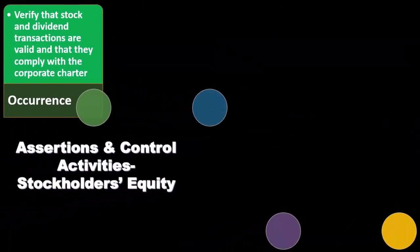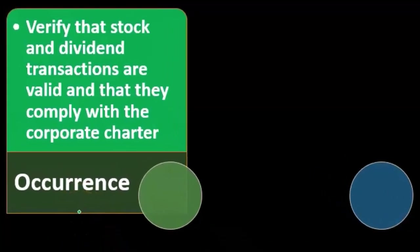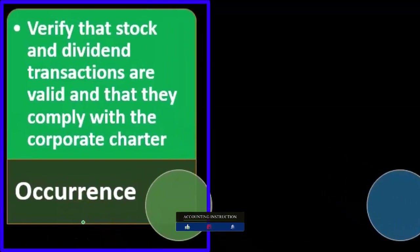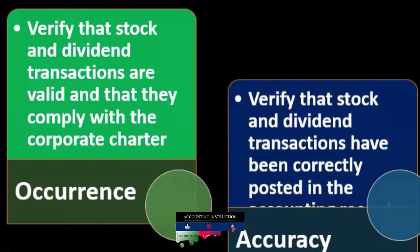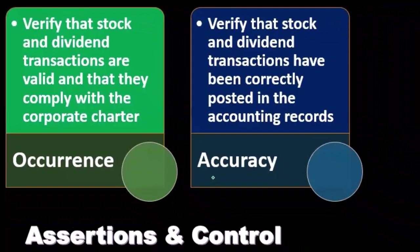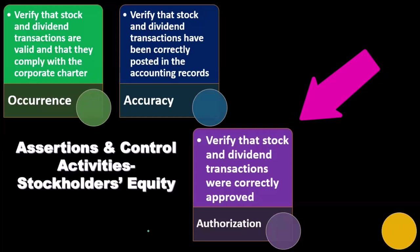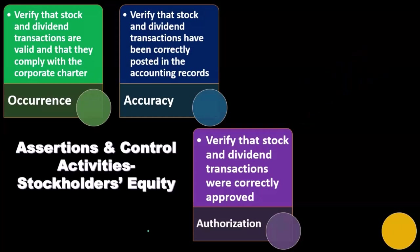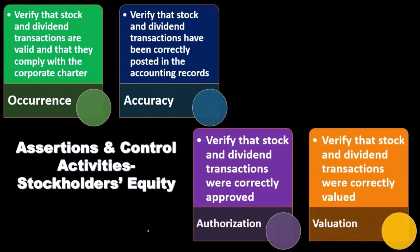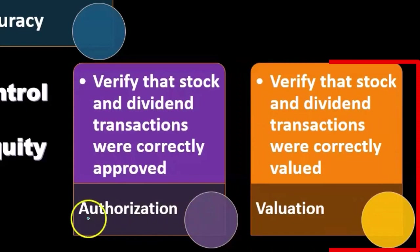Now we'll consider assertions and control activities related to those assertions for stockholders' equity. The assertion of occurrence: verify that stock and dividend transactions are valid and comply with the corporate charter. The assertion of accuracy: verify that stock and dividend transactions have been correctly posted in the accounting records. The assertion of authorization: verify that stock and dividend transactions were correctly approved through a formal approval process. The valuation assertion: verify that stock and dividend transactions were correctly valued.